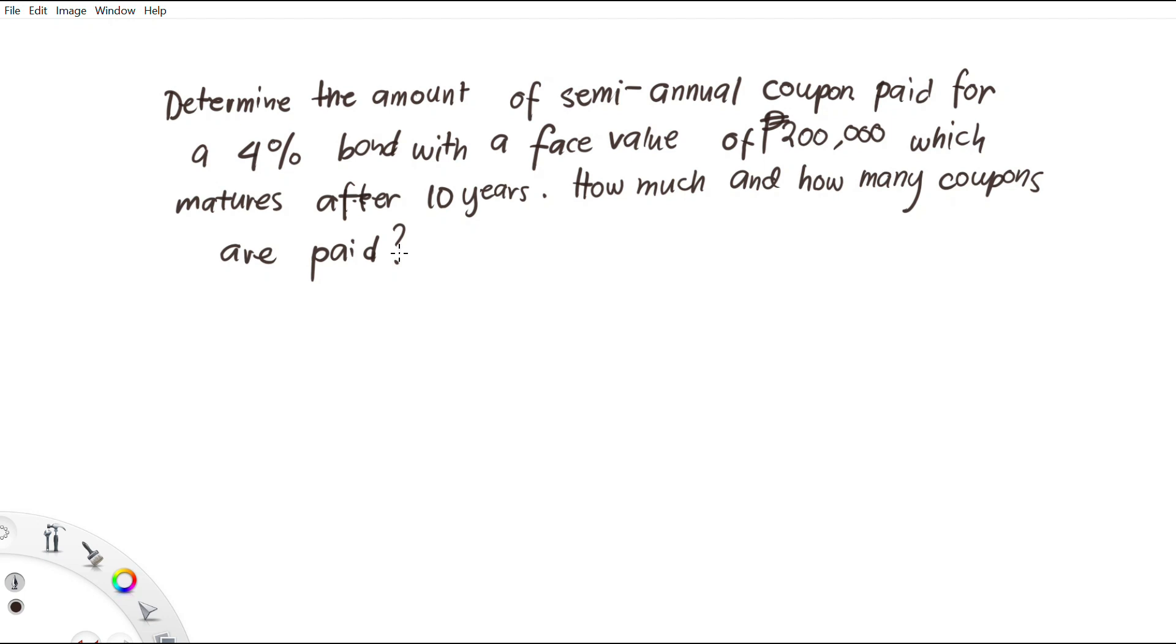We have another exercise: determine the amount of semi-annual coupon paid for a 4% bond with a face value of 200,000 pesos which matures after 10 years. How much and how many coupons are paid? Again, we write the given values first. We have a face value of 200,000...